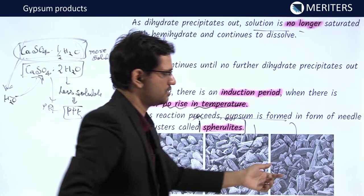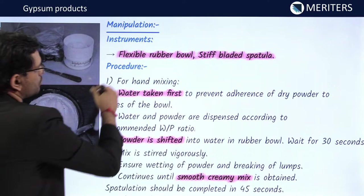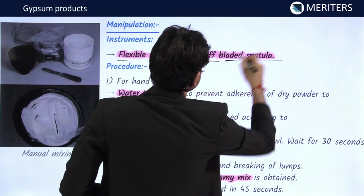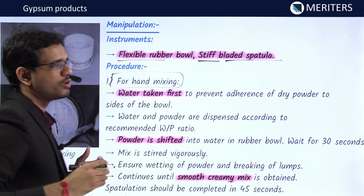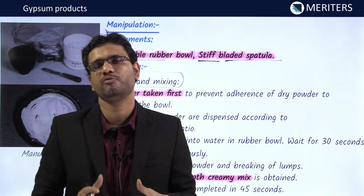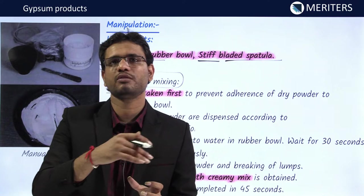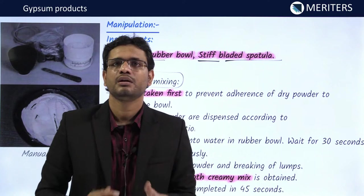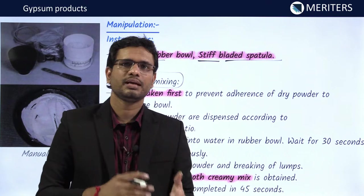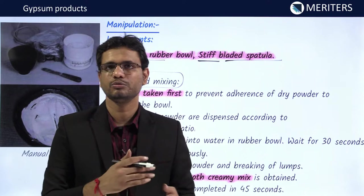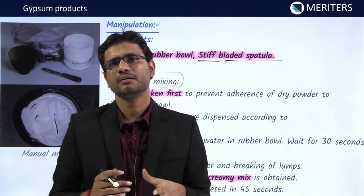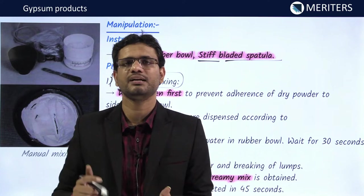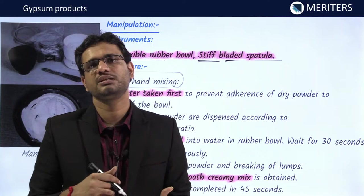For mixing gypsum products, the armamentarium includes a flexible rubber bowl and a stiff-bladed spatula. For hand mixing, always measure the water first before dispensing the powder, as powder may adhere to bowl walls and alter the water-powder ratio. After adding water in the appropriate amount, add the hemihydrate powder and allow to soak for 30 seconds so all particles are wetted.